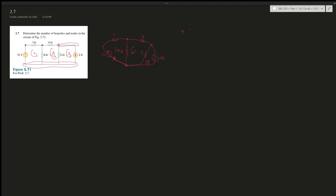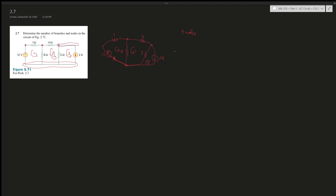Now we have to think about branches. Branches are just the elements within the circuit. So here's one, two, three, four, five, and six — but that would be five branches: one, two, three, four, five.